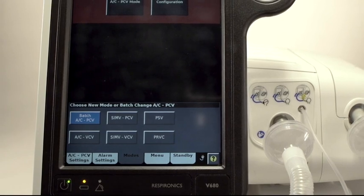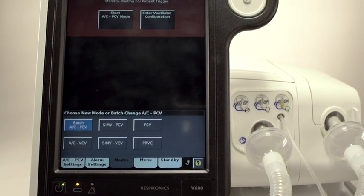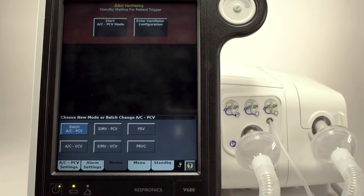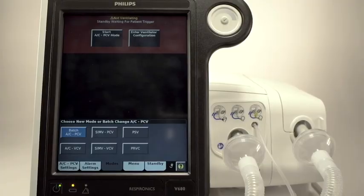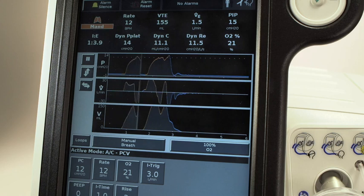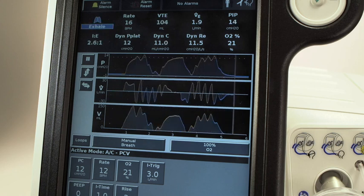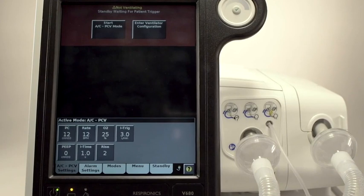Our transformation is complete. We have changed V680 from a single-limb, dedicated non-invasive ventilator into a dual-limb, invasive critical care ventilator. With this change, we have also incorporated the active exhalation valve in Pressure Control Ventilation. This will help to control exhaled gas pressure spikes to improve patient-ventilator synchrony.